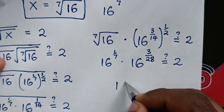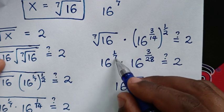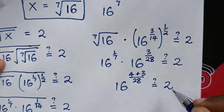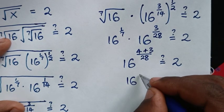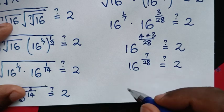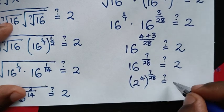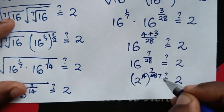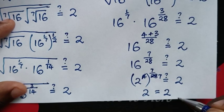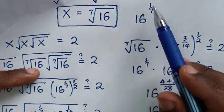Then we add the powers: LCM of 7 and 28 is 28, so 28 divided by 7 is 4, giving 4 over 28, plus 3 over 28 is 7 over 28. So it is 16 power of 7 over 28. Now 16 is the same as 2 power of 4, so it becomes 2 power of 4 times 7 over 28, which is 2 power of 1, which equals 2. Left side equals right side, confirming x equals 7th root of 16, or 16 power of 1 over 7.